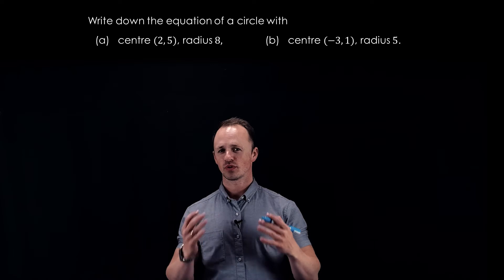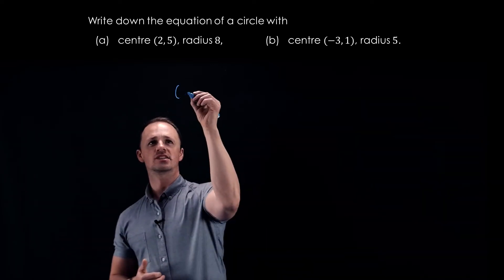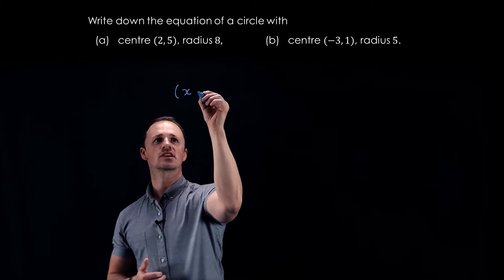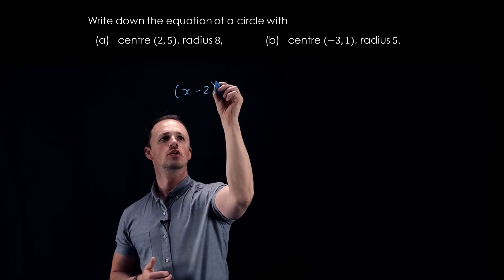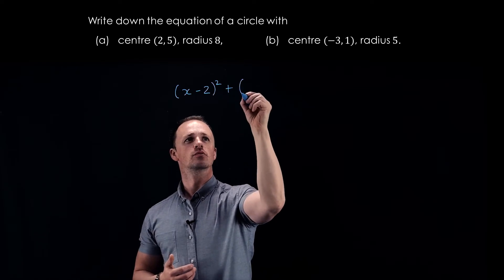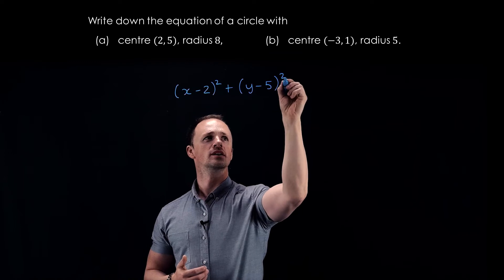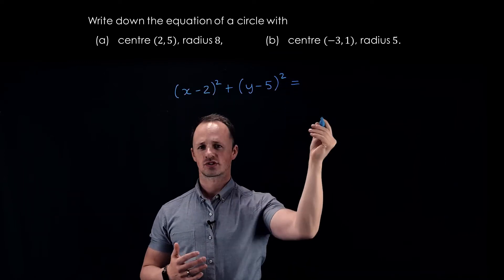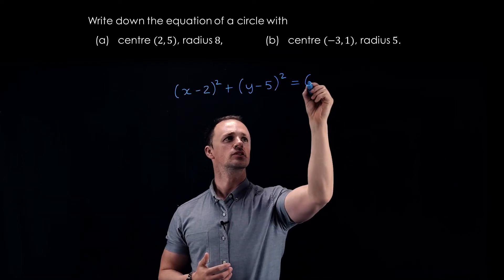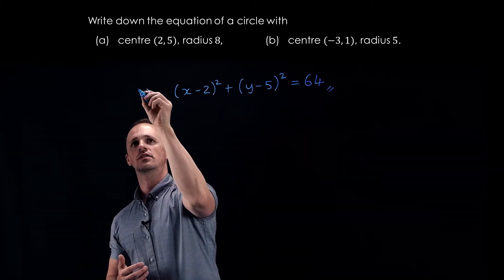All we've got to do is put those values into our circle equation. The x-coordinate of the center is 2, so we have (x - 2)². The y-coordinate is 5, so we have (y - 5)², and that equals the radius squared. 8² is 64, so that is the answer to part A.